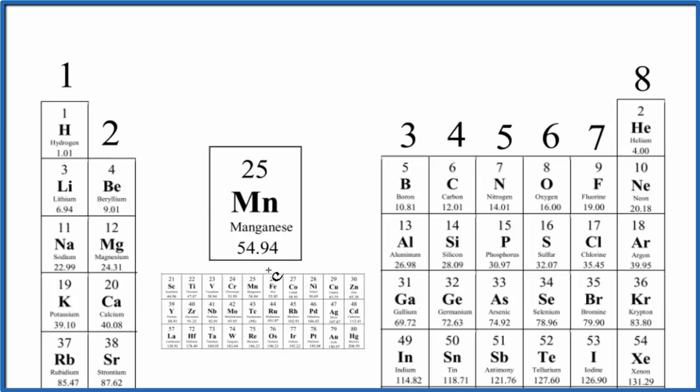But we skip the transition metals. Here's manganese right here in the transition metals. We skip those. Groups 13 through 18, they have 3 through 8 valence electrons. So the main groups, it's pretty easy.